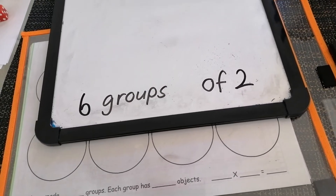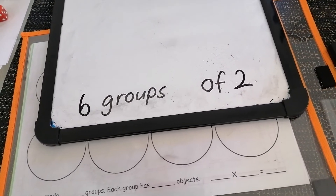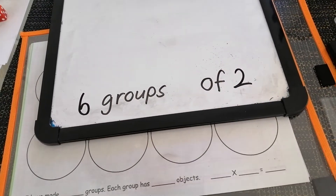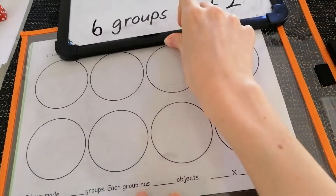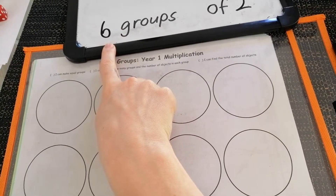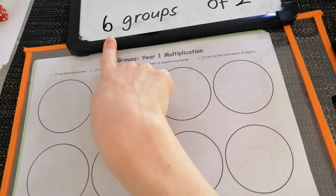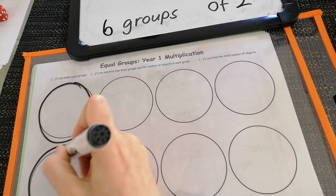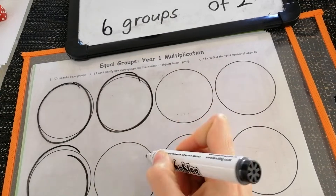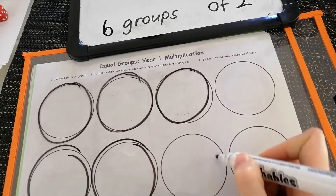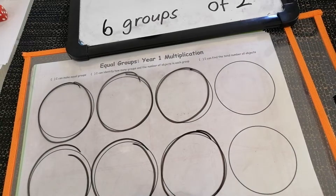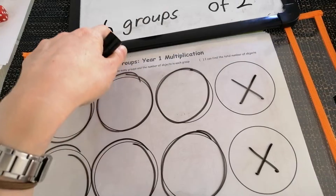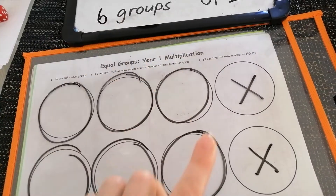Let's try another one. Our next question says six groups of two. So I need to make six groups with two objects inside each group. Moving to my mat, I need to use six circles. I'm going to count: one, two, three, four, five, six. I have my six groups, and I'm going to cross these ones out so I don't get confused, because I don't need any more than six.